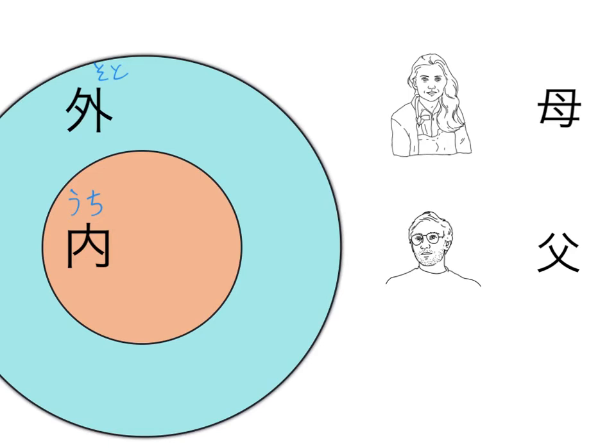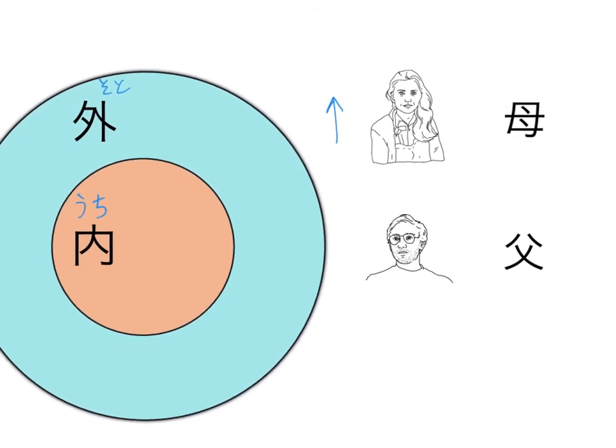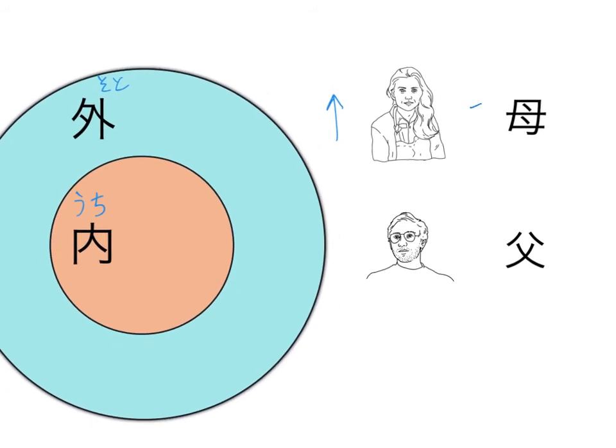So these terms also do have respectful versions. So when I want to talk about someone else's mother, someone who is in the soto area, the outside, I'm going to have to add this honorific o before the kanji and a san after. Thinking about that, we know that o in front of namae makes it more polite to your listener for onamae. O in front of tanjobi makes it more polite, otanjobi.